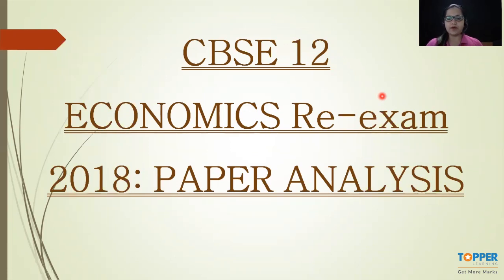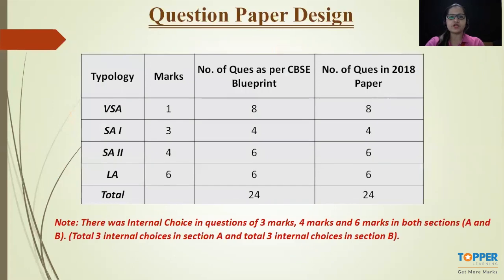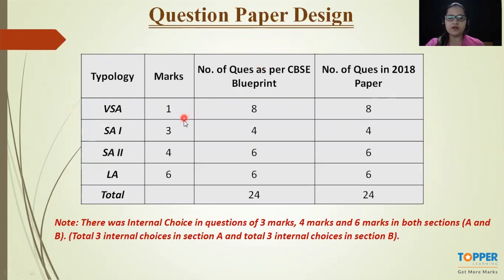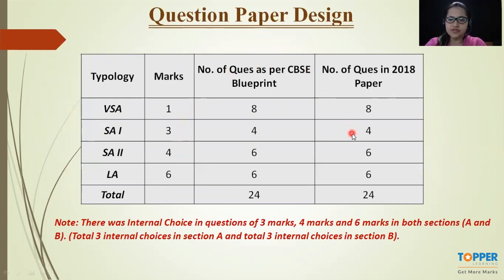Let's analyze today's paper, starting with the question paper design. The design was exactly the same as per the CBSC blueprint. In the paper, there were one-mark, three-mark, four-mark, and six-mark questions — eight questions of one mark, four questions of three marks, six questions of four marks, and six questions of six marks. Overall, there were 24 questions in the paper.